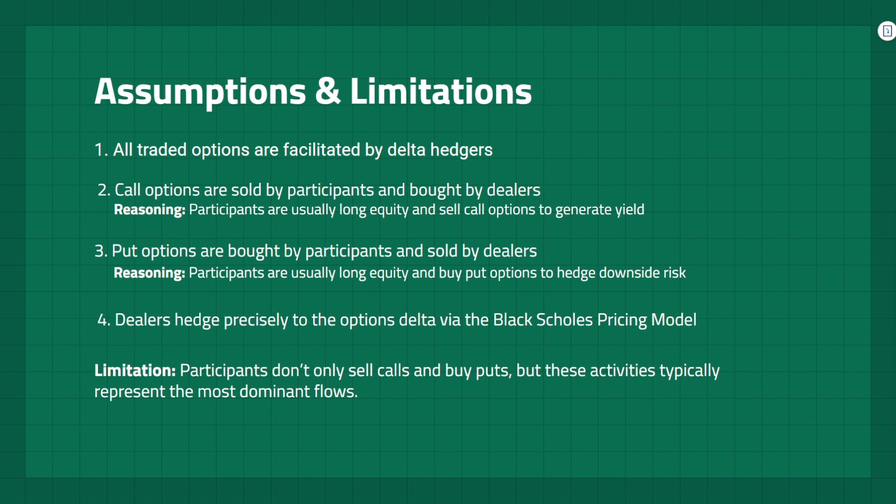That is the basic hedging dynamic just looking at one position. However, dealers can have tens of thousands of positions with the goal of maintaining delta neutral on the entire book. From a practical perspective, it is important to understand the net hedging impact on the market as a whole.